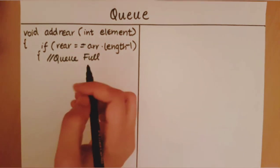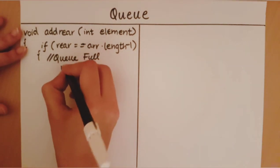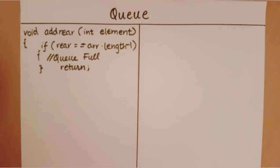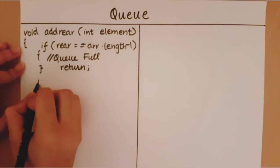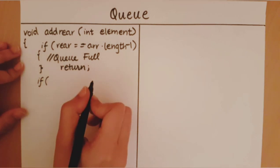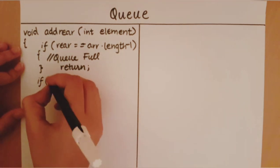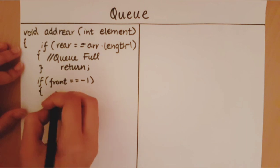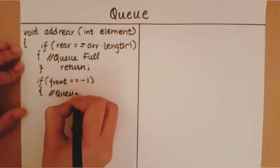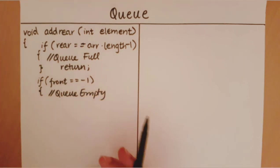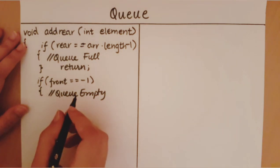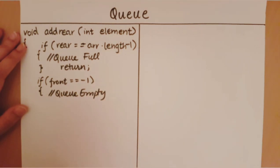We don't want to continue further because there is no scope for adding an element, so we return. The next check is whether we are adding the first element of the queue — we check if the queue is currently empty. If front is equal to minus one, we say the queue is empty. We could also check whether rear is equal to minus one; both give the same result. If the queue is empty, we initialize front and rear to zero and add the element to the zero-index position of the array.